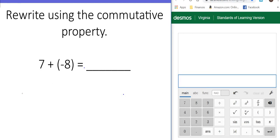This says rewrite using the commutative property. Well, commutative starts with the two letters C-O, which means change order.